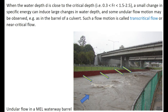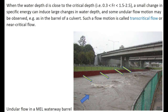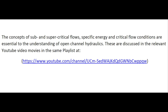When the water is close to the critical depth, that is, for a Froude number between roughly 0.3 to 1.5 to 2.5, a small change in specific energy can induce large changes in water depth. An ondular flow motion may be observed, for example, as in a barrel or culvert. Such a flow motion is called transcritical flow or near-critical flow, with the photograph below showing an ondular flow in a minimum energy loss waterway, with the arrows pointing to the wave crests of the ondulations.